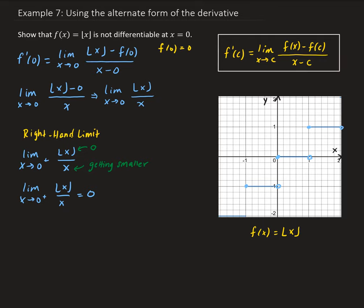Now let's look at the left-hand limit. So we're going to have the limit as x approaches 0 from the left of the floor function divided by x. Looking at the graph of the floor function, as x approaches 0 from the left, the floor function is going to approach negative 1.